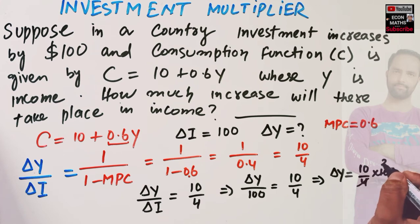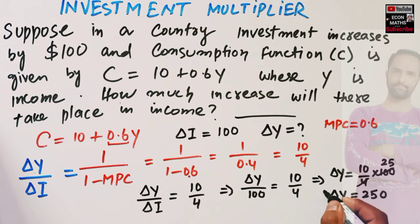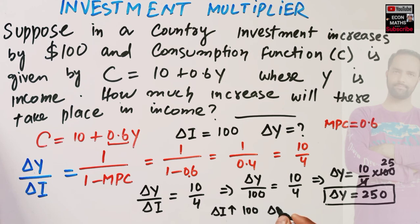That means our change in income will be equal to 250, which implies when investment increases by $100, income will increase by $250. I hope I make myself clear in this video, thank you.